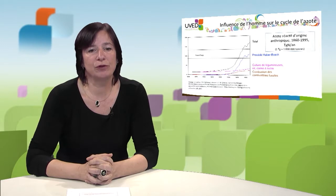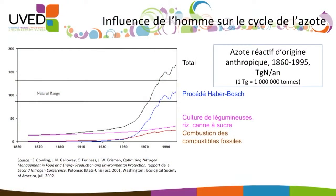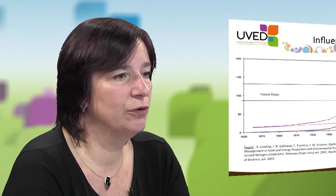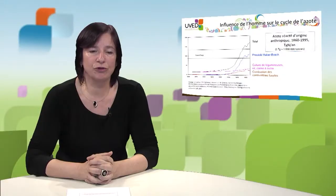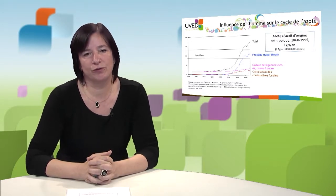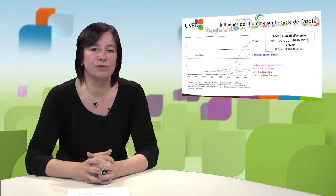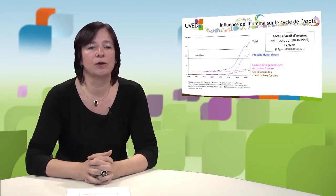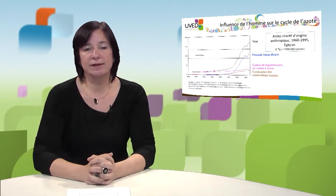Alongside the Haber-Bosch process, we see the importance of growing rice and sugar cane, which increases the bacterial fixation of nitrogen as it occurs naturally in ecosystems. The third origin of reactive nitrogen is the combustion of fossil fuels. In total, we can say that the nitrogen cycle is an open biogeochemical cycle because the circulated quantities are far greater than they would be naturally, and they lead to storage effects — a disruption of the cycle in the biosphere.